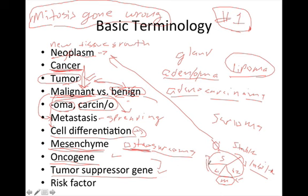Tumor suppressor genes essentially take a damaged cell and put it into what's called the gap zero phase, where the cell tries to repair itself. If it can't repair, it will terminate itself. If it's unable to do that and continues to grow, that's when a neoplasm forms. Biopsies of tumor cells often show mutations in tumor suppressor genes — the most commonly discussed is the p53 gene.